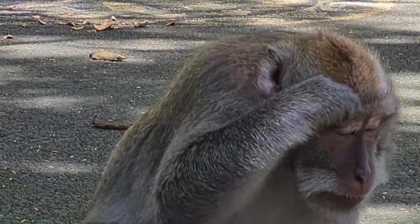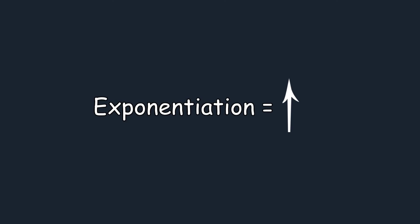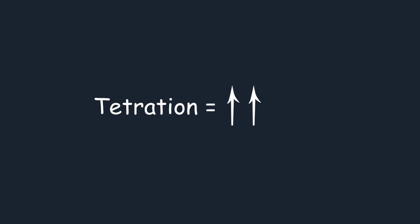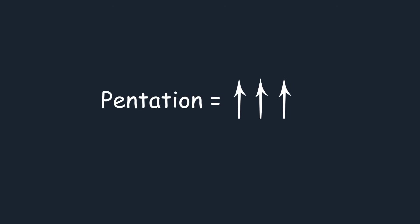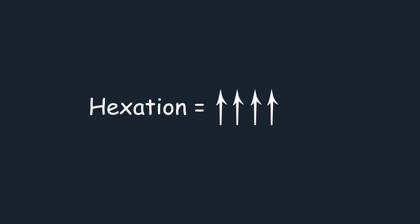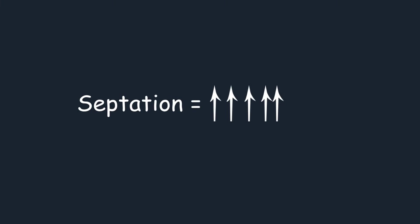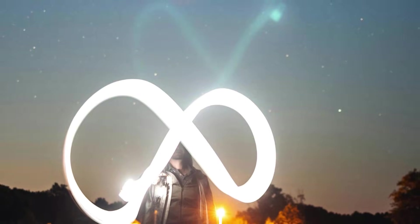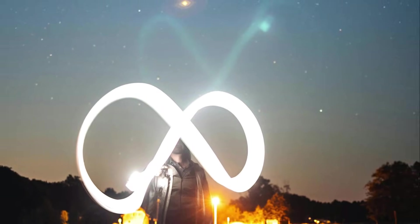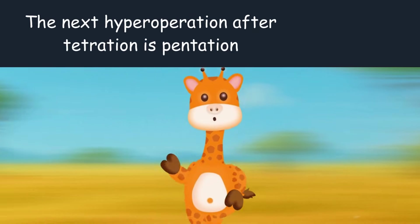Imagine then something could exist beyond tetration. And yes, exactly. Exponentiation equals one up arrow. Tetration equals two up arrows. After it comes pentation, which is repetition of tetration. Then comes hexation, which is repetition of pentation. Then comes septation, which is repetition of hexation. And octation, which is repetition of septation. And so on, going on to infinity and beyond. All of these are called hyperoperations.